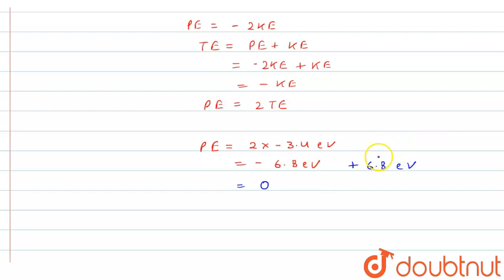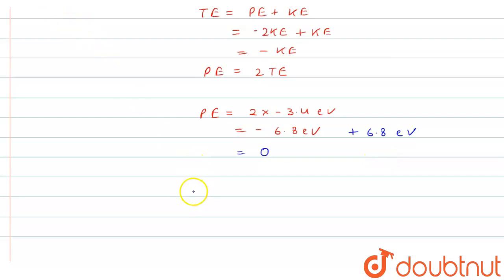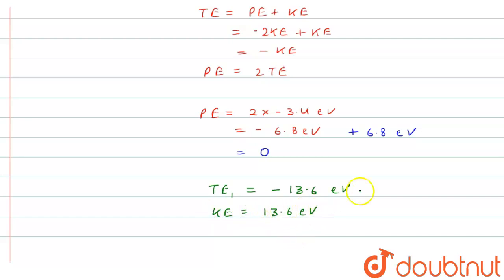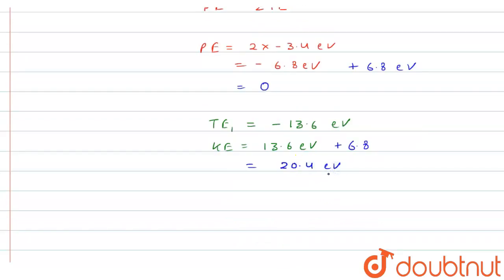Now let's find the kinetic energy in the ground state (n = 1). The total energy in the ground state is -13.6 eV for the hydrogen atom, so the kinetic energy is 13.6 eV. But according to this system where potential energy is zero in the first excited state, we add 6.8 eV here also, giving us 13.6 + 6.8 = 20.4 electron volts.